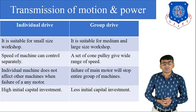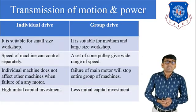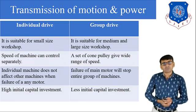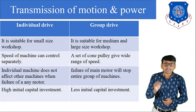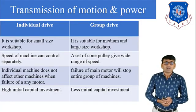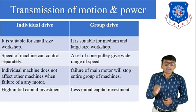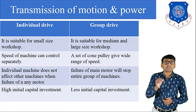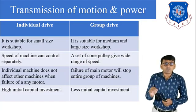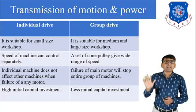First comparison: individual drive is suitable for small size workshops, and group drive is suitable for medium and large size workshops. Second comparison: in individual drive, the speed of each machine can be controlled separately, while in group drive a set of cone pulleys gives a wide range of speeds. Third: in individual drive, failure of any motor does not affect other machines, whereas in group drive, failure of the main motor will stop the entire group of machines.